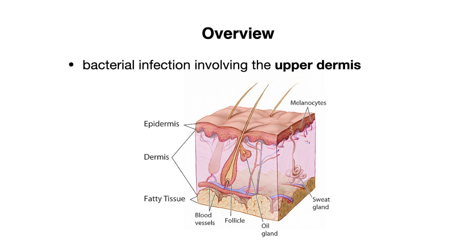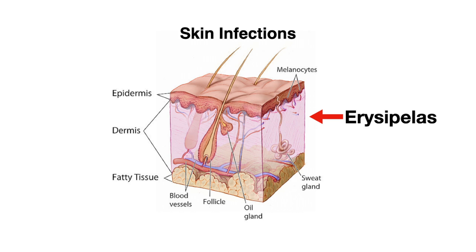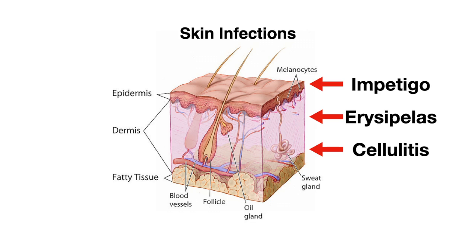Erysipelas is a bacterial infection involving the upper dermis, and you can see this highlighted here on our skin diagram. To understand this better, let's contrast it with other skin infections. Erysipelas occurs in the upper dermis, whereas impetigo is a more superficial skin infection. These two differ from cellulitis, which is an infection of the deeper dermis and subcutaneous fat.